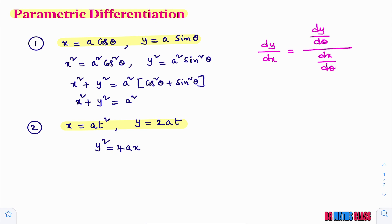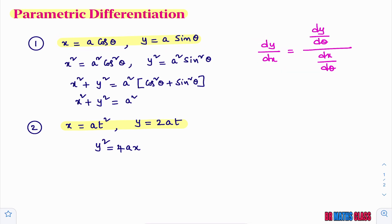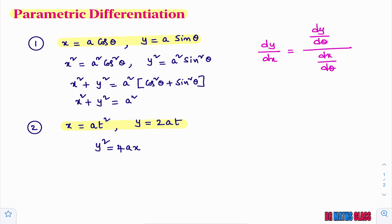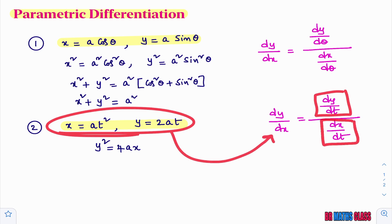First we calculate dx by d theta, next we calculate dy by d theta, and substitute in the formula to get dy by dx. For parametric equations with parameter t, dy by dx is defined as dy by dt divided by dx by dt. So if parametric equations are given with parameter t, dy by dx equals dy by dt divided by dx by dt.